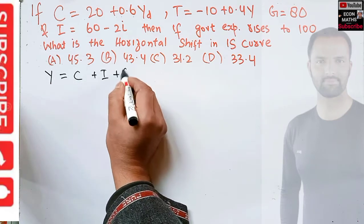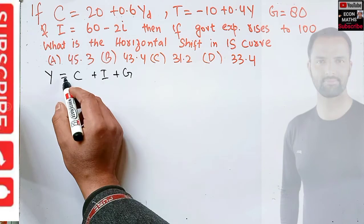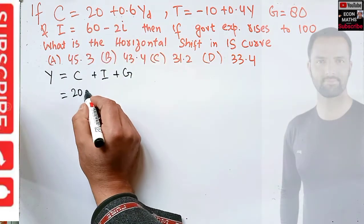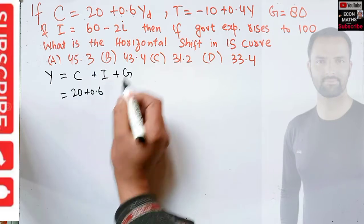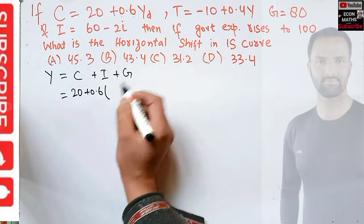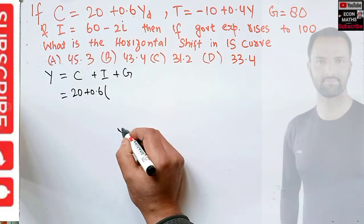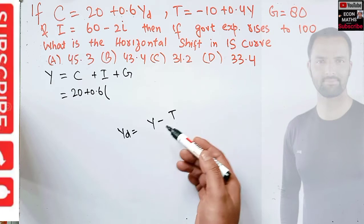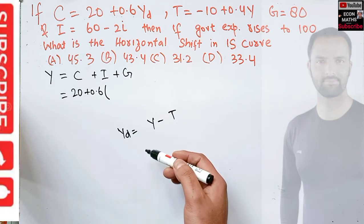That is Y = C + I + G. Now what is the value of C? C is given as 20 + 0.6Y_D. How do we get disposable income? Y_D = Y - T.